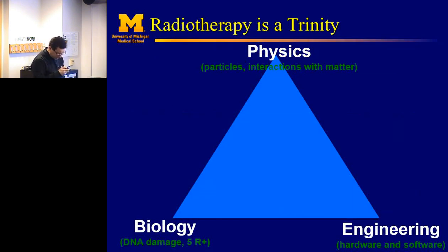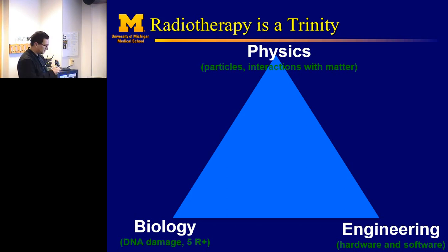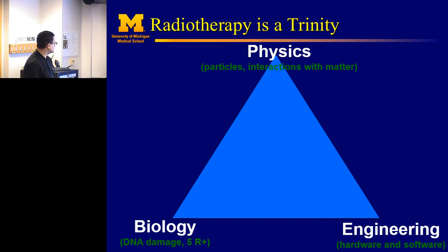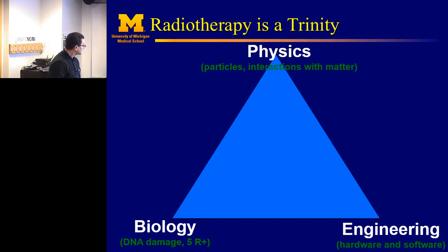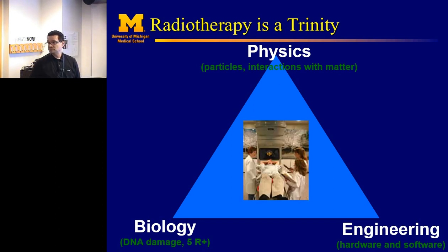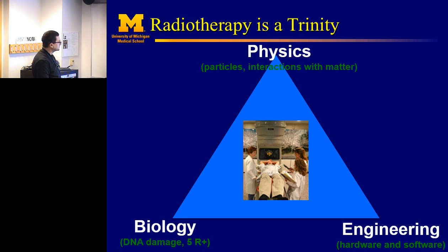Radiotherapy is actually a trinity — a combination of physics, biology, and engineering. It's based on using particles, photons or x-ray type particles, high-energy particles. It interacts with tissue — that's the biology part — and the systems are built with different kinds of engineering. This is one example: a linear accelerator. This is the treating team, and this is where the radiation comes from — the device rotates around the patient generating x-rays intended to cure the patient.